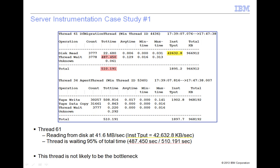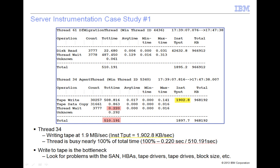This is within the range of expected throughput for disk I/O. The thread wait time is 487.450 seconds, or 95% of the total thread time. Since this thread is waiting most of the time, it is probably not the bottleneck.